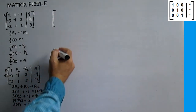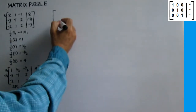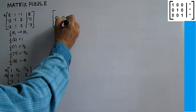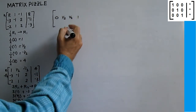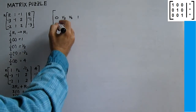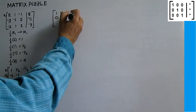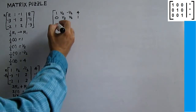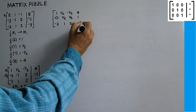Replace row 2 with these numbers and copy row 1 and row 3. New row 2: 0, 1 half, 1 half, 1. Row 1: 1, 1 half, negative 1 half, 4. Row 3: negative 2, 1, 2, negative 3.